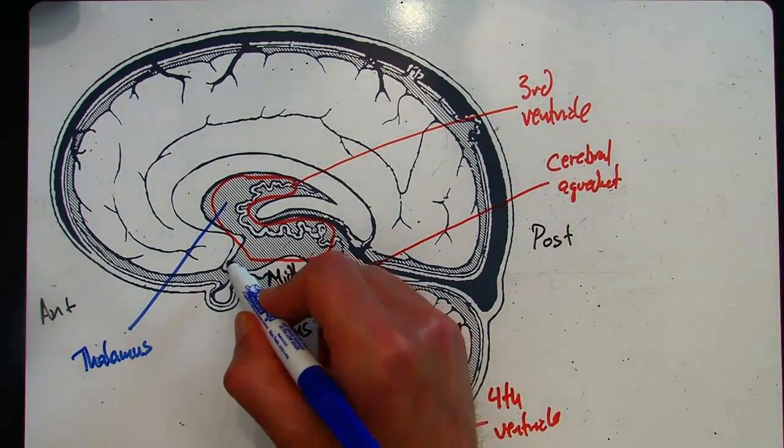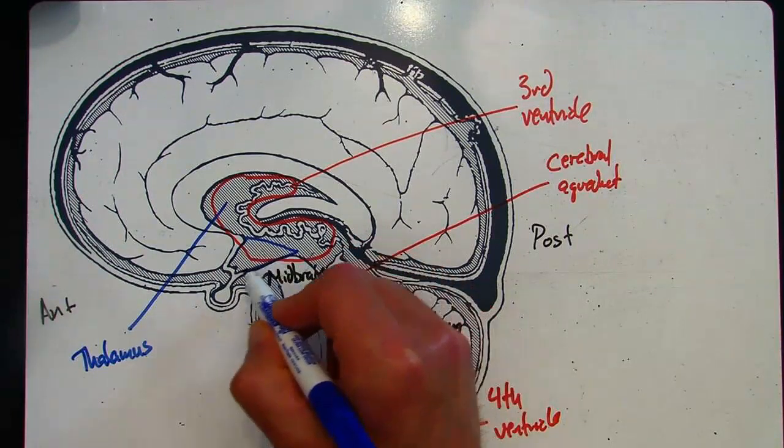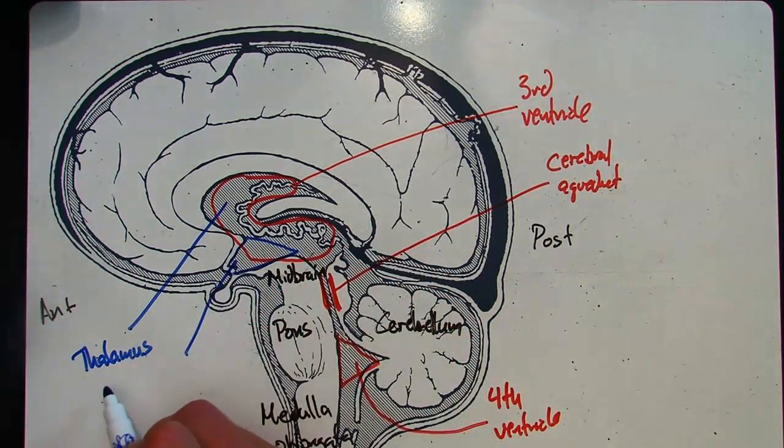Below that, this area that's down here that's roughly triangular, that's the hypothalamus.